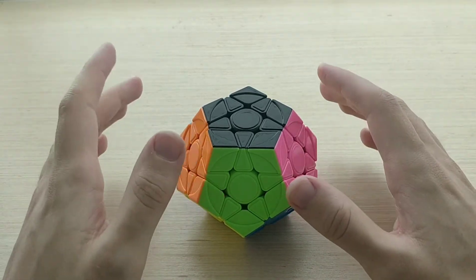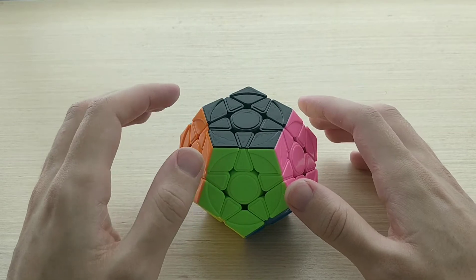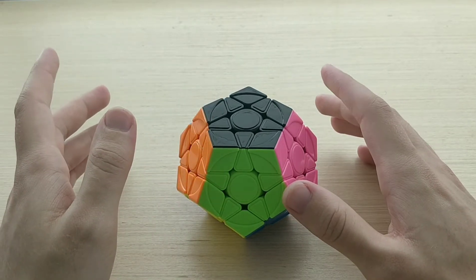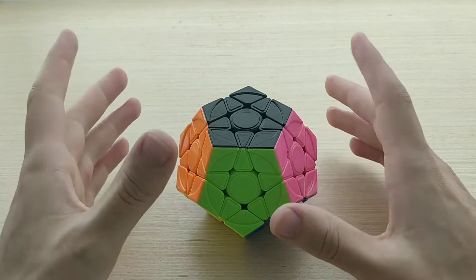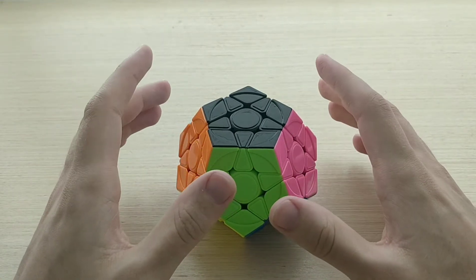These cases are pretty evenly split between 3x3 transfers and new algs, although all of the new algs are super fast, and all of the cases, both the 3x3 transfers and the new algorithms, have really easy recognition. So these are pretty great sets.